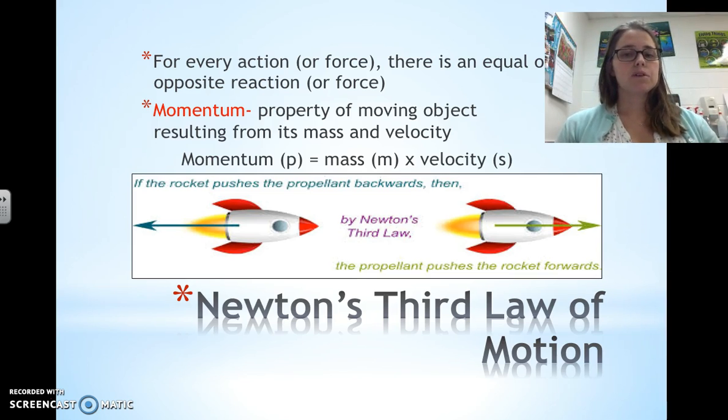If the rocket pushes the propellant, so here's our rocket, okay, and by definition, Newton's third law of motion, okay, is that if the rocket pushes the propellant backwards, so in other words, there's the flame, okay, it's going to, therefore, move forward. So, the propellant is the fire. It shoots it backwards, and therefore, it reacts by moving forwards.